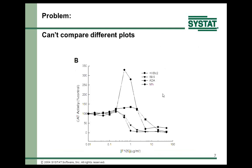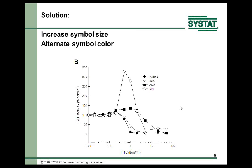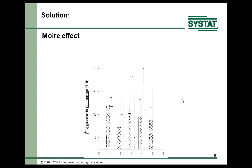Here is a graph that was published where you can't easily see which curves correspond to which entry in the legend. So it was modified by alternating symbol color and making them larger, and now you can much more easily identify which curve is which. The alternating symbol color is a default in Sigmaplot.